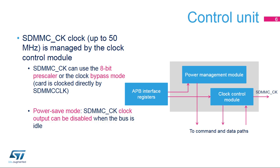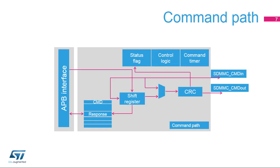The SDMMC adapter includes a control unit that contains a power management module and a clock control module with a clock divider for the card clock, SDMMC-CK. The clock control module provides an 8-bit prescaler for SDMMC-CK clock generation, which allows it to generate a clock equal to one-half SDMMC-CLK. It also provides a bypass mode for communications up to 50 MHz. The control unit can disable SDMMC-CK generation when the bus is idle.